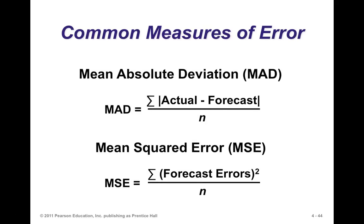So how do we know if our forecasts are any good? One of the things we've got to do is to find ways to measure the accuracy of our forecasts. We have the actual values and the predicted values, and an important measure is the error in the forecast. If we take the actual minus the forecast, we have an error, and we could generate a number of measures using that data.